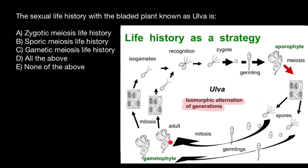This haploid gametophyte produces haploid gametes through mitosis — not through meiosis, but through mitosis. The sporophyte produces spores through meiosis, which are haploid. The gametophyte, because it is haploid, produces gametes that are also haploid through mitosis. Again, gametes have only two flagella — they look similar to spores, but spores have four flagella.